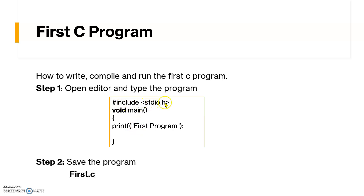I have taken one statement: stdio.h. stdio.h stands for standard input output and is used to include all the directives required to perform input and output operations. We also have the main function — execution of our program always starts from the main function. The printf statement is used to display whatever characters you write at the output screen.